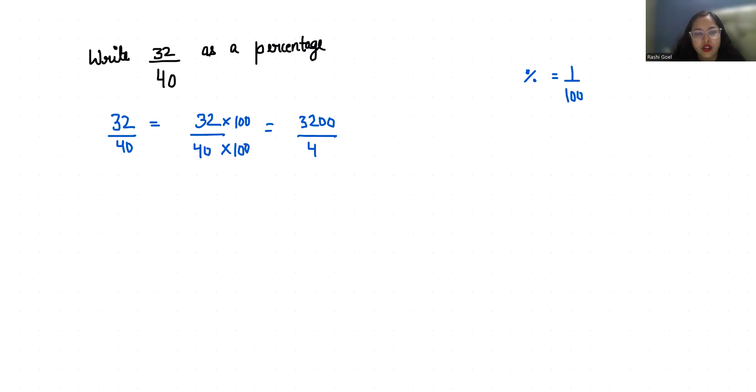out 100 I can write as 1 by 100. Now we will cancel out: 3200 divided by 40 times 1 by 100, which equals 80 times 1 by 100, and we can replace this 1 by 100 with